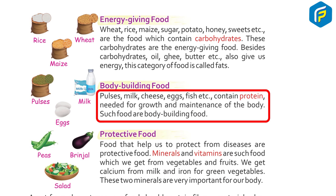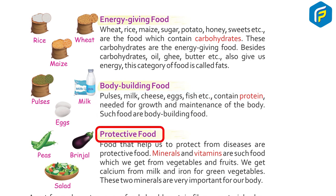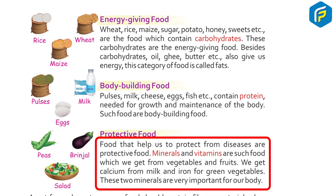Body-building foods include pulses, milk, cheese, eggs, and fish — these contain protein needed for growth and maintenance of the body. Protective foods help protect us from diseases; minerals and vitamins are such foods, which we get from vegetables and fruits. We get calcium from milk and iron from green vegetables — two very important minerals for our body.